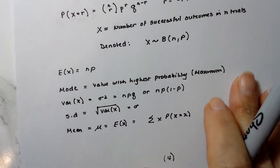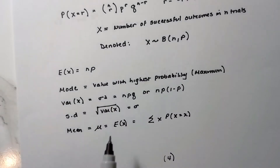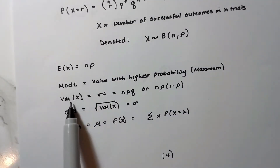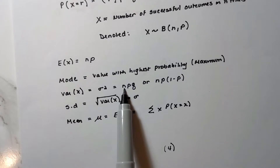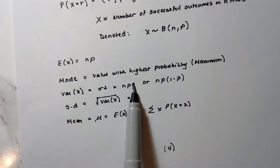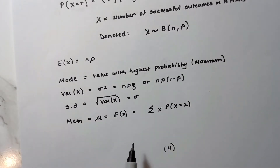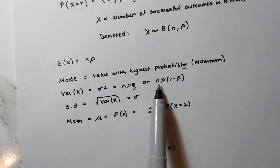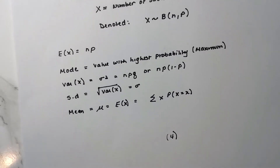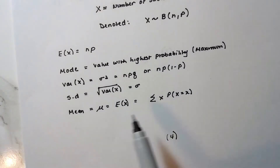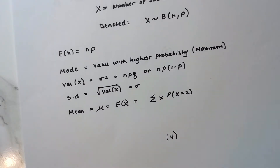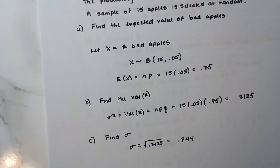For the binomial distribution, the expected value is simply n times p — super easy. The variance σ² is npq — number of trials times probability of success times probability of failure. The standard deviation is the square root of the variance. The mean μ equals the expected value, which is the sum of x times its respective probability.